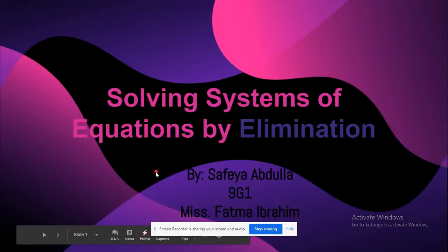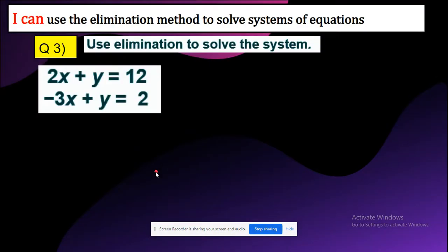Solving systems of equations by elimination. I can use the elimination method to solve systems of equations. Use elimination to solve the system. We have 2x plus y equals 12 and negative 3x plus y equals 2.